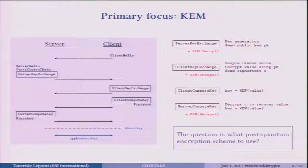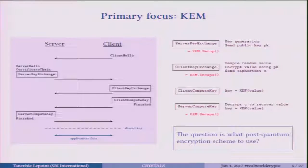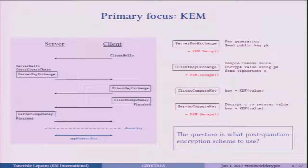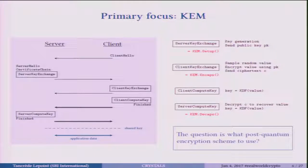The first part is a public key part that is transmitting a secret key that will then be used in the application data. So if we want to replace, for example, RSA or elliptic curves, the question is: what post-quantum primitive, what post-quantum encryption, should we use in these boxes? The first step here is the setup of the KEM — key encapsulation mechanism. And then there is the encapsulation itself and the decapsulation.